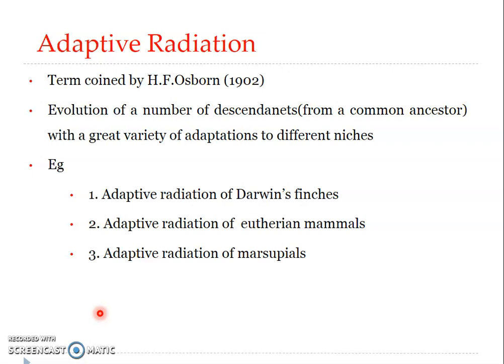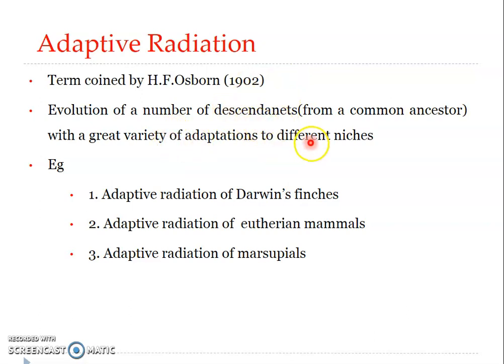Adaptive radiation, on the other hand, was a term coined by H.F. Osborne in 1902 for explaining the evolution of a number of descendants from a single ancestor, with those descendants having a great variety of adaptations to different niches. Adaptive radiation refers to the evolution of a number of descendants from a common ancestor, where those descendants show a great variety of morphological or behavioral adaptations to different niches.